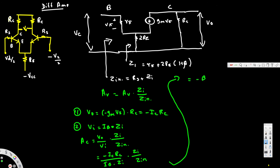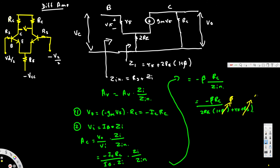This equals negative beta times Rc divided by Zin, which becomes negative beta times Rc divided by (2Re times (1 + beta) + r5 + Rs). We can neglect the 1 in (1 + beta) and Rs approaches zero, so the expression simplifies. Finally, the common mode AC gain equals negative Rc over 2Re.